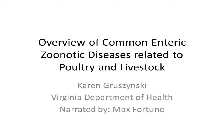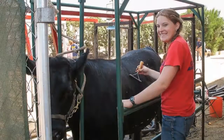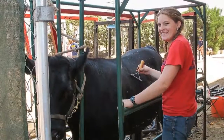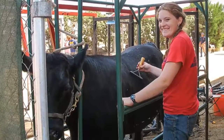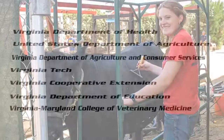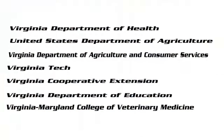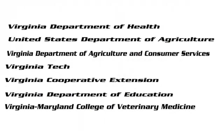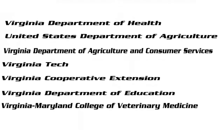This module will provide an overview of some common enteric zoonotic diseases, how they are transmitted, and some basic steps people can take in preventing infection with enteric zoonotic pathogens. This presentation is part of a series of zoonotic disease presentations developed by the Virginia Department of Health in cooperation with many agencies and institutions.